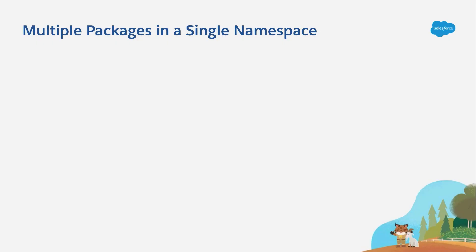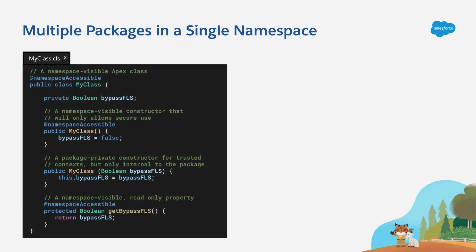One of the aspects that makes this such a powerful feature is the ability to execute cross-package Apex without the use of global classes or methods. Consider this example of an Apex class. If we were building this in 1GP, I'd have to mark this class as global if I wanted code from outside of its package to use it. In other words, if I want to use this class across my own packages, I have to create an API that everyone can use, including my customers and my competitors.